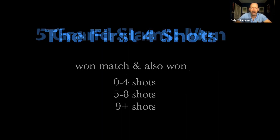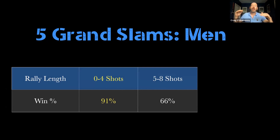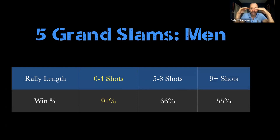Here's the data — won the match, also won the rally length. For men across five grand slams: if the player won the match, they won the zero-to-four rally length correspondingly 91% of the time. Almost a lock. Now the next two: five-through-eight drops way down. We start at a 50-50 baseline — the match winner is only winning the five-to-eight rally 66% of the time. And the long rallies start at 50-50 and only marginally rise to a 55-45 advantage.